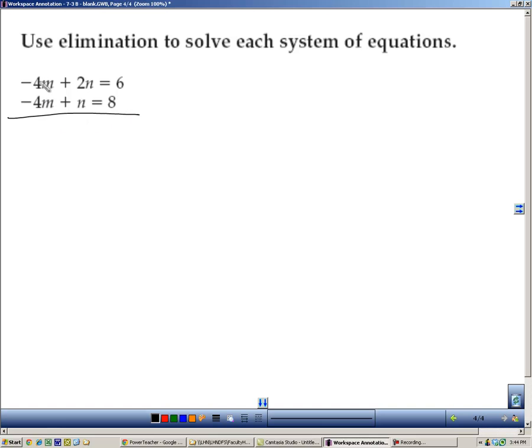Here's elimination, coefficients are the same here, so we'll subtract. Negative 4 minus negative 4 is the same as negative 4 plus 4, because you're adding the opposite inverse. That's why you get a 0 here, I just wanted to show that to you. 2 minus 1 is 1n, and 6 minus 8 is negative 2.